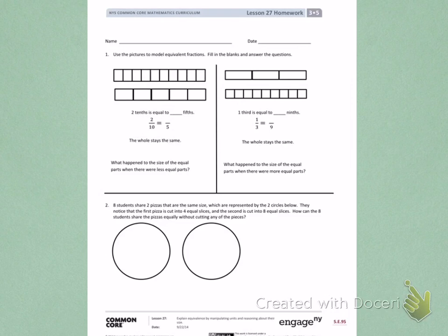Number 1. Use the pictures to model equivalent fractions. Fill in the blanks to answer the questions. I see that the first fraction strip has been partitioned into tenths, and the second fraction strip has been partitioned into fifths.